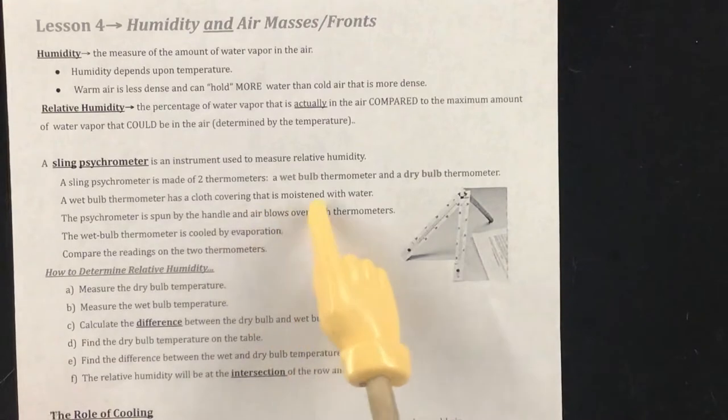A wet bulb thermometer has cloth covering that and it's moistened with water. The psychrometer is spun by the handle and air blows over both thermometers. The wet bulb thermometer is cooled by evaporation. Then we compare the two thermometers.